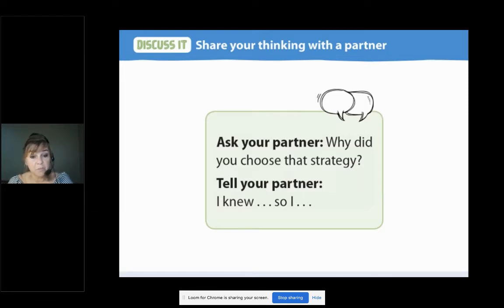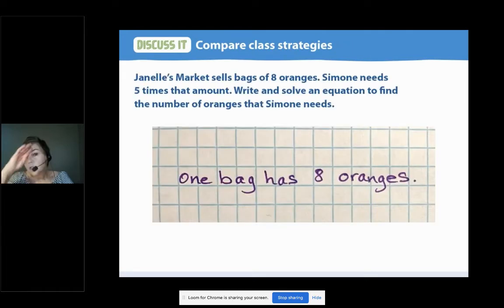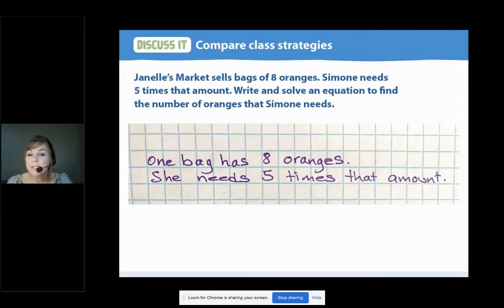All right, let's look at some other ways to solve the problem. And as we go through them, think about how they're similar or different from how you did it. So I read the problem. Janelle's market sells bags of eight oranges. Simone needs five times that amount. Write and solve an equation to find the number of oranges that Simone needs. So I knew that there were eight oranges in one bag. So I wrote it down. And I knew that Simone needs five times that amount. Does Simone need five oranges? No, she needs five times that amount. Okay.